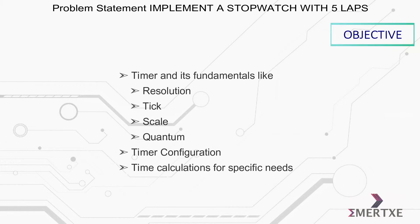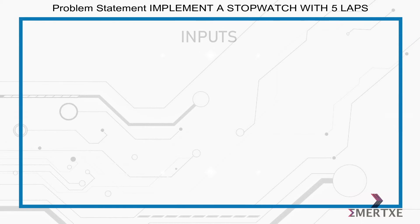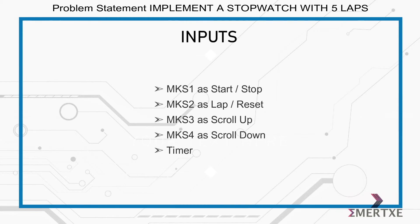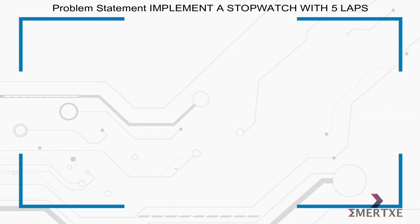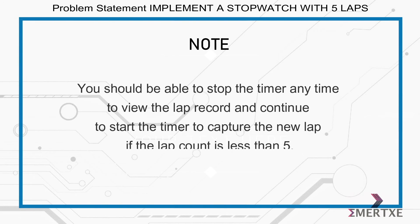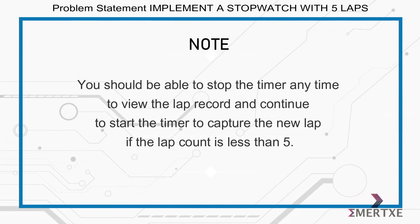Time calculations for specific needs. The inputs required for this assignment are MKS1 as start or stop, MKS2 as lap or reset, MKS3 as scroll up, MKS4 as scroll down, and timer. Please note that you should be able to stop the timer anytime to view the lap record and continue to start the timer to capture a new lap if the lap count is less than 5.